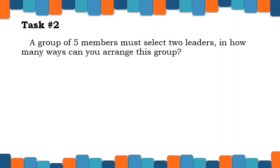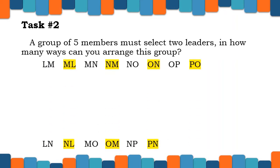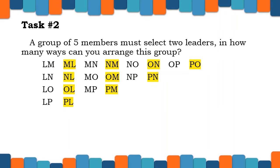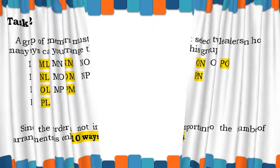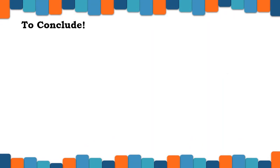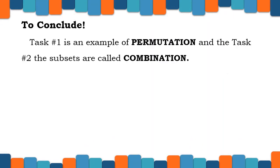Let us now move to our second task. A group of 5 members must select 2 leaders. In how many ways can you arrange this group? Removing those with the same letters from our arrangements in Task 1, in arrangements we need to consider if the objects are in order or not. Since the order is not important, the number of arrangements is only 10 ways. Task 1 is an example of permutation, and in Task 2 the subsets are called combination.